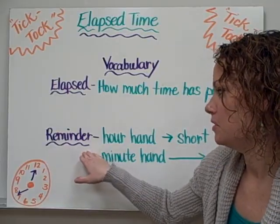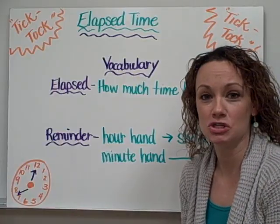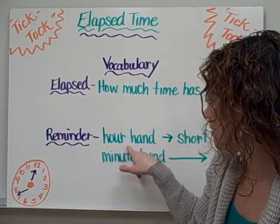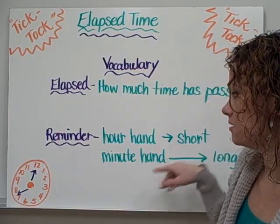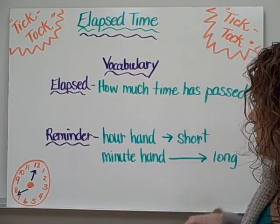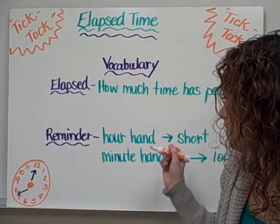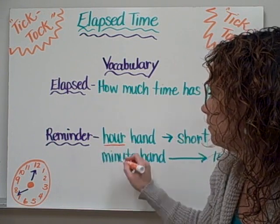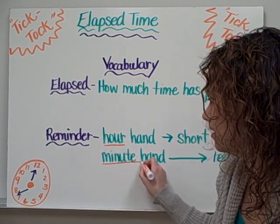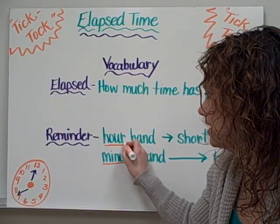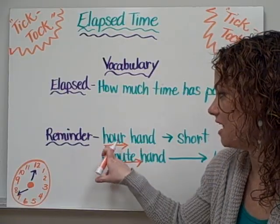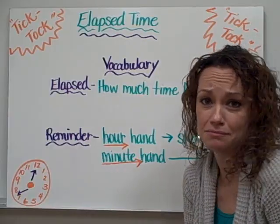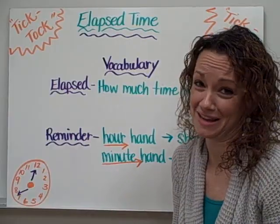A little reminder to you: when dealing with elapsed time, that time is often shown with a clock. The hour hand is the short hand and the minute hand is the longer hand. The way I help my students remember that is the word 'hour' actually looks shorter than the word 'minute.' If you were to underline those words, you would see that the word 'hour' has a shorter underline than the word 'minute.' Just a little trick I like to use sometimes.